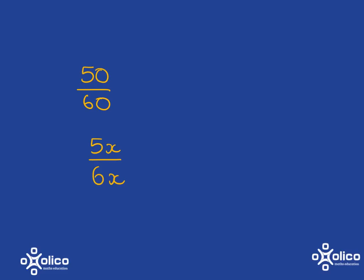Division is equally well behaved. As long as we divide top and bottom by the same thing, we get an equivalent fraction. So, 50 over 60, if I divide the top by 10 and the bottom by 10, I am going to get 5 over 6, which is an equivalent fraction.